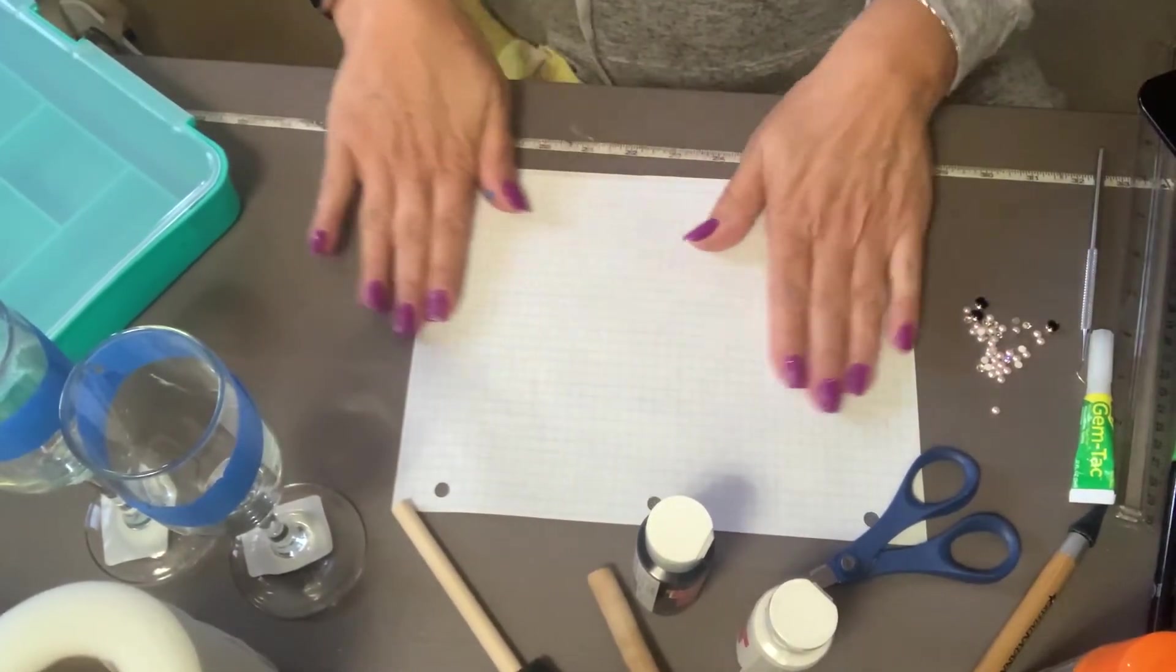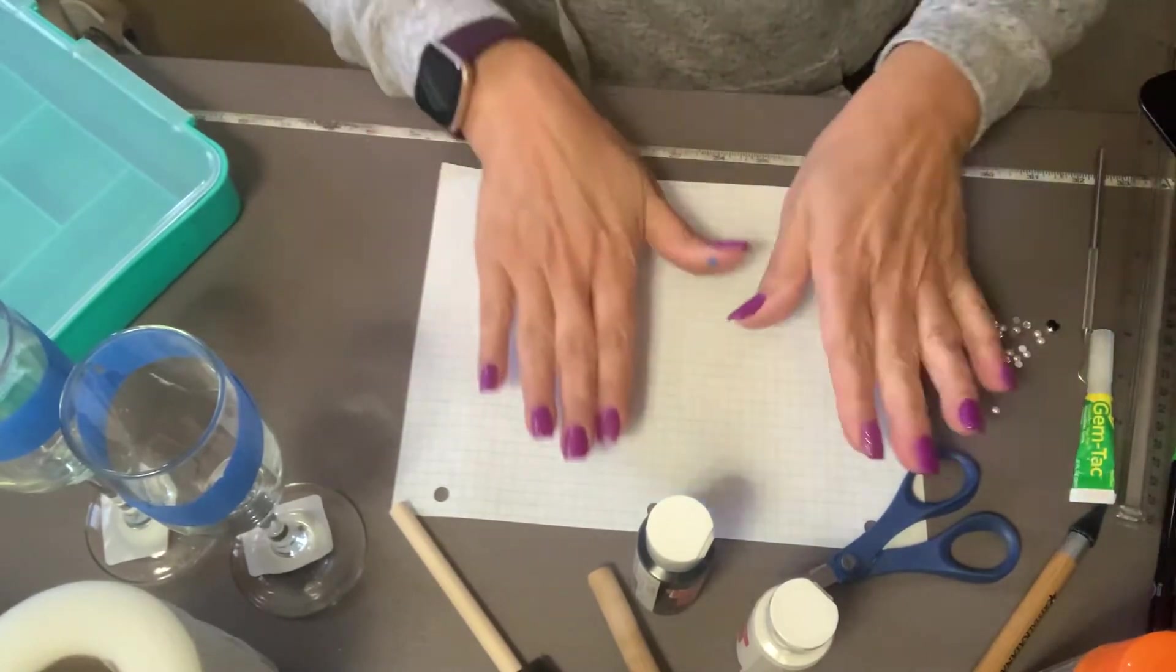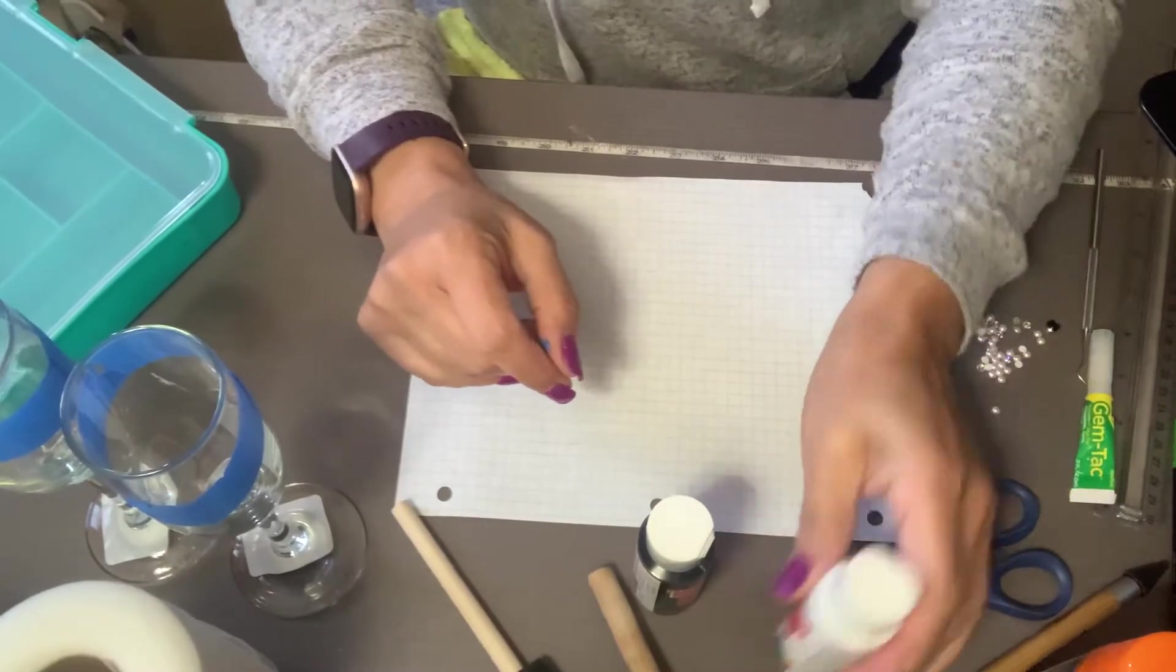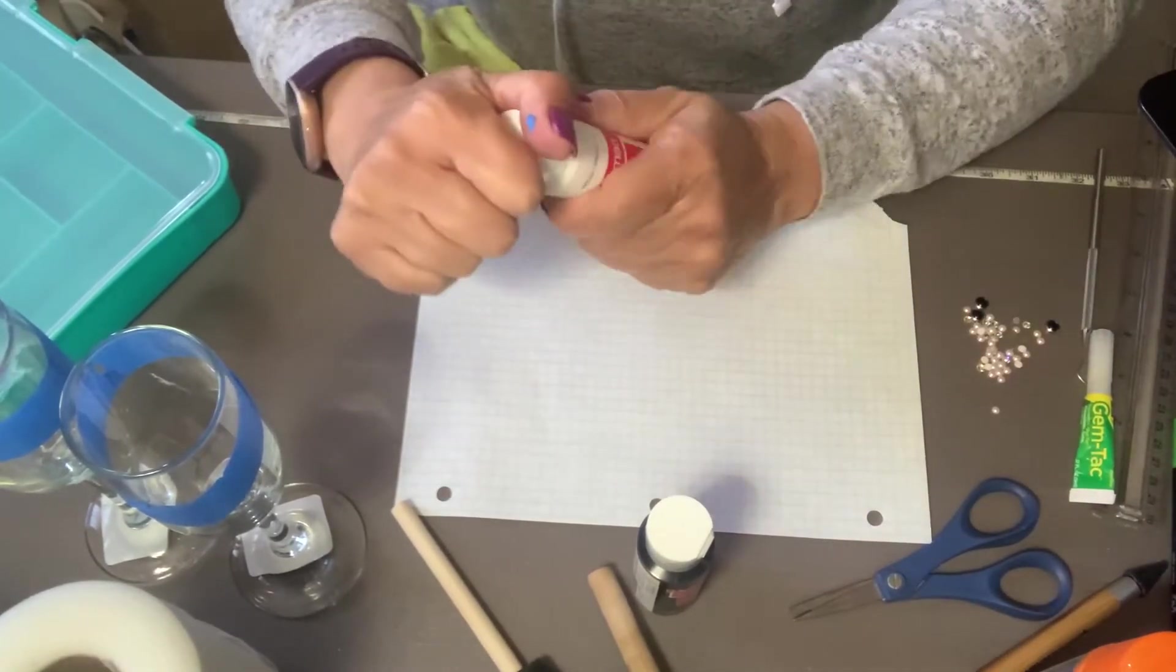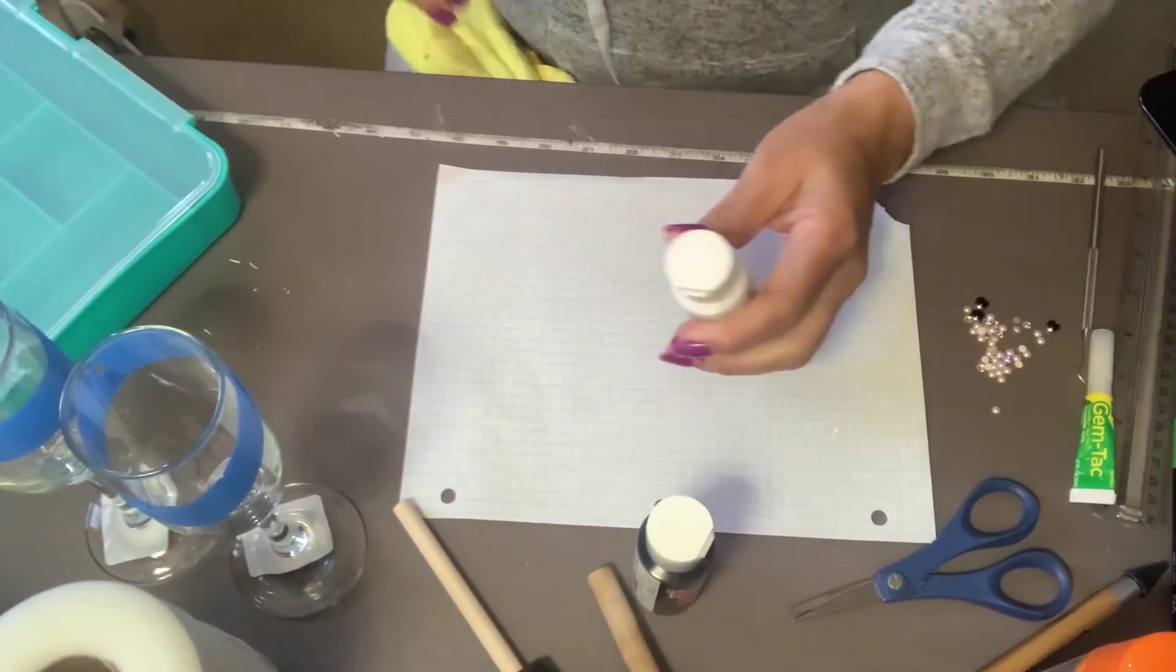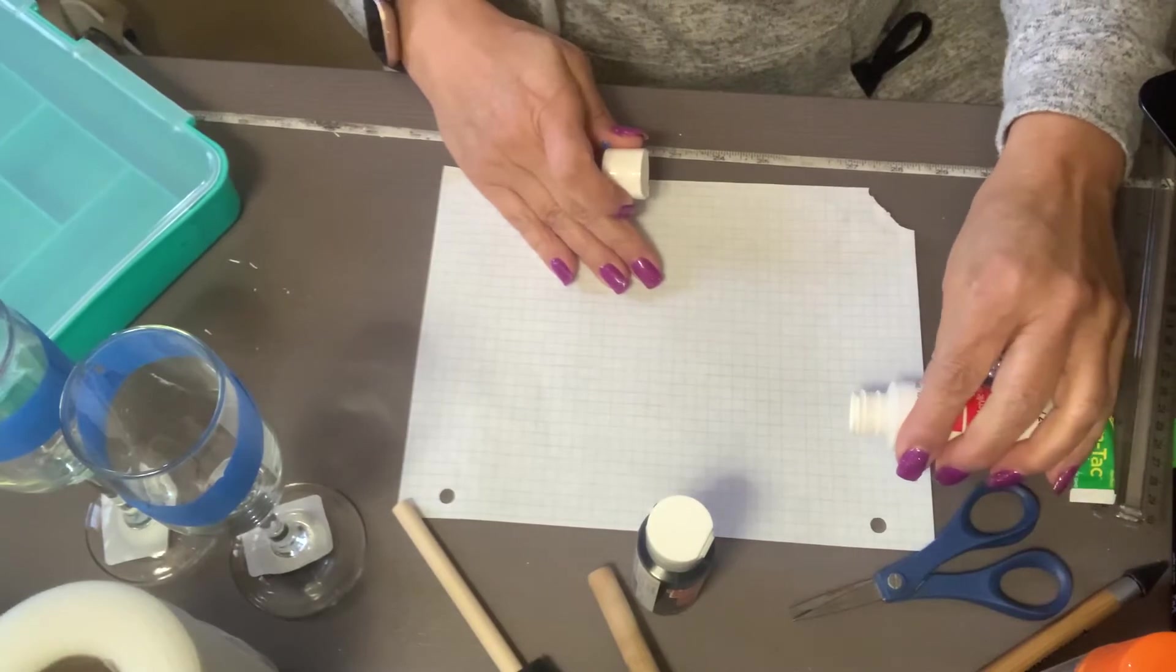Okay, so for the next step, I have a paper here, but you can have like a little plastic container, whatever works for you. I like this because once I use it, I can throw it away. So I'm going to go ahead and do the white one first, only because I'm going to need to do a second coat.